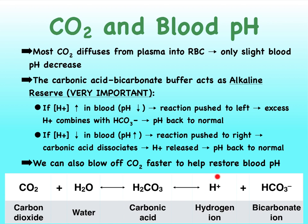The opposite can be the case as well. If our hydrogen ion levels are dropping, that will pull the reaction to the right so that we continue to dissociate carbonic acid into our hydrogen ions and bicarbonate ions, and our pH goes back to normal.